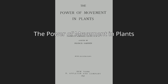The Power of Movement in Plants is a book by Charles Darwin on phototropism and other types of movement in plants. This book continues his work in producing evidence for his theory of natural selection, as it was one of his last books.